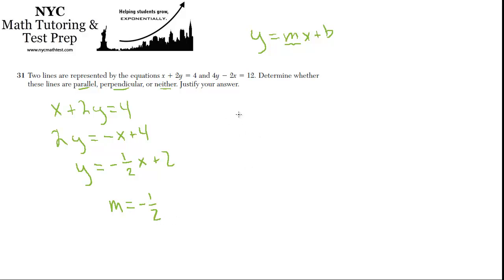Second line, 4y - 2x = 12. Let's add 2x to both sides, 4y = 2x - 12. Now divide both sides by 4. Y = 1/2x - 3, so m = 1/2.